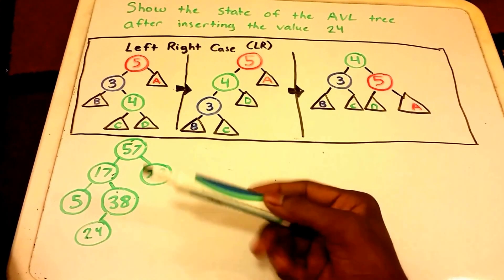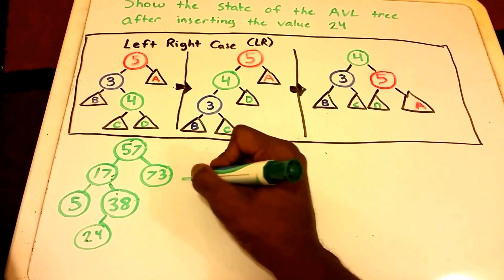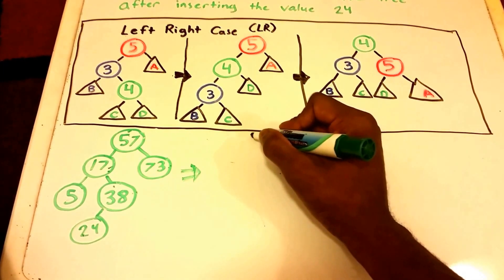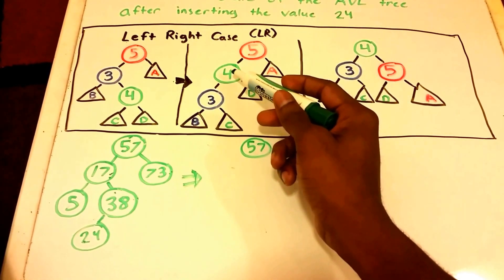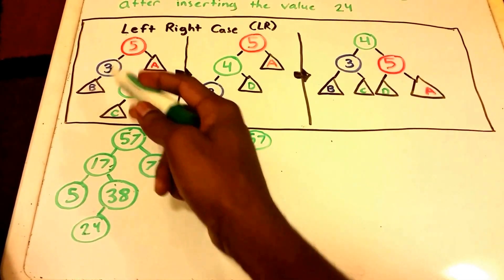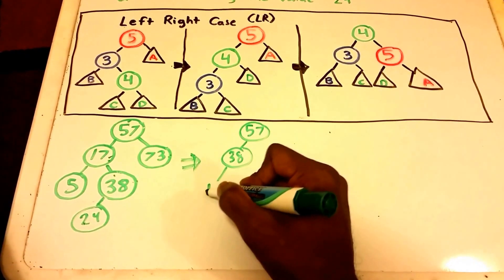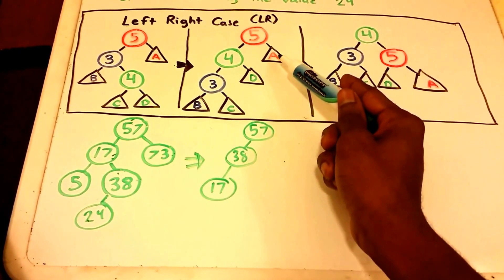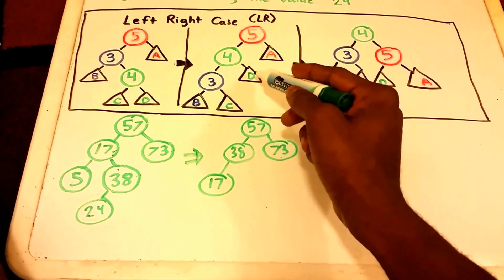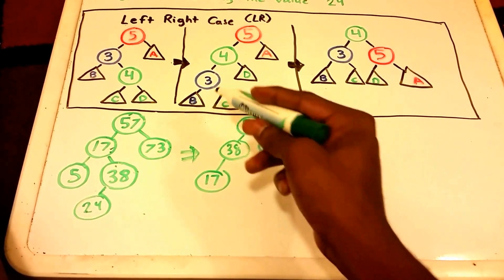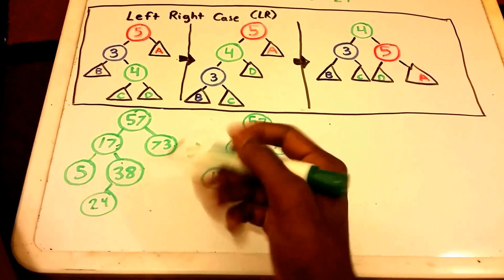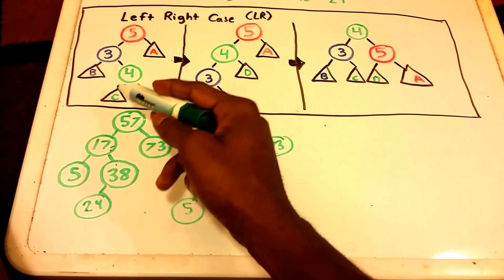Let's go ahead and do this left-right rotation. 57 is our 5, so we can put 57 here. 4 was our 38, so we put 38 here. 3 was 17. 5 had A, so A was 73. 4 has D, so D was nothing. 3 has B and C, so B was our 5 and C was our 24.